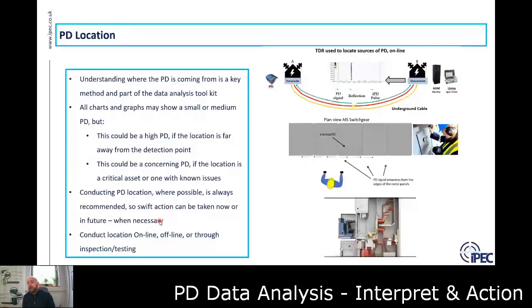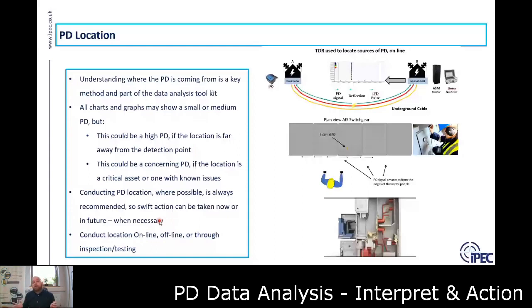The next step is PD location. Many people think you only conduct PD location when you're ready to repair, but that is not the IPEC philosophy. We recommend locating PD whenever you can. Unless we know the PD location, we don't know how far that signal has traveled to reach the sensor, so we don't know how attenuated it is. We also don't know what asset the PD is coming from — for example, corona ionizing the air is not very concerning, but contamination on a bushing or insulator on a critical component could be very concerning even at a lower level. So we recommend locating all PDs so you can take swift action, if not now, then in the future.